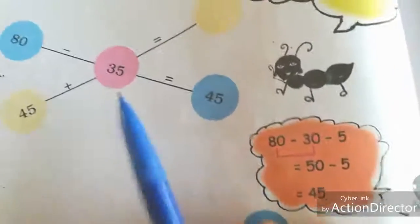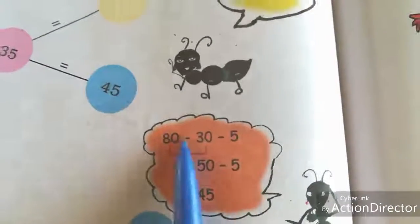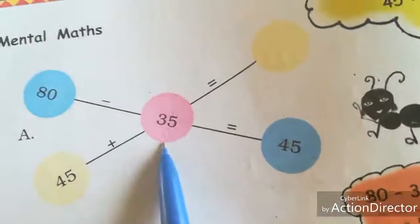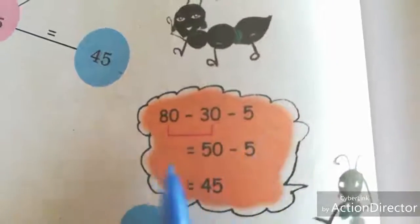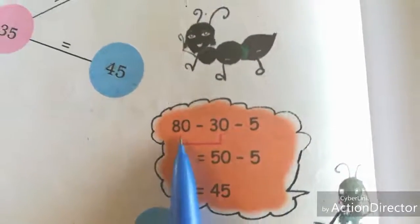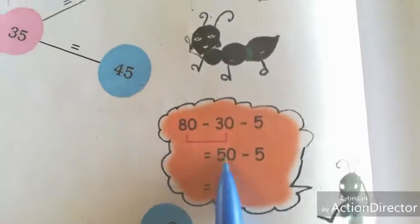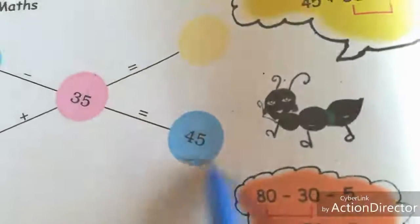So they separate the 35 into 30 and 5. Now we have 80 minus 30 minus 5. Why minus? Because the sign is a minus sign — subtraction. First, subtract 80 minus 30, that is 50. Next, 50 minus 5, that is 45. So the answer is 45.